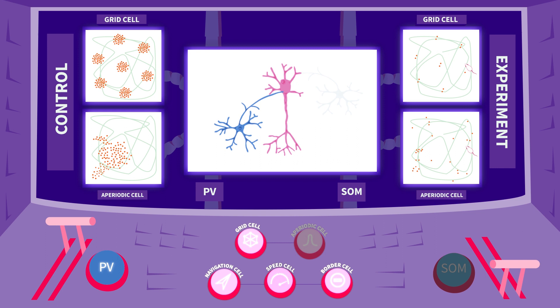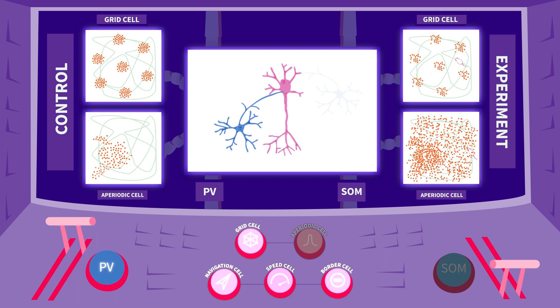Silencing the SOM interneurons in contrast did not affect the grid pattern. Instead, the firing location of the aperiodic cells became more dispersed and less confined.